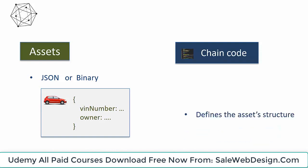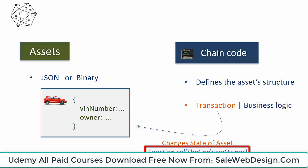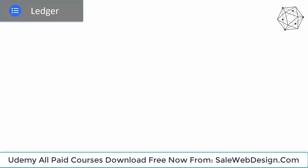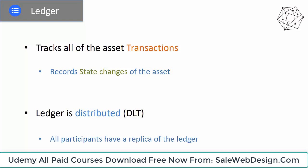State changes on Hyperledger Fabric can only take place by way of well-defined transactions coded in chaincode. Chaincode defines the structure of the asset and the transactions that can be executed against it — it has all of the business logic needed for the transaction. In the example of a car, there can be a function 'sell the car' defined in the chaincode, and calling this function leads to transfer of ownership of the specific car to the new owner. All transactions are recorded in a ledger — a data structure that keeps track of all transactions and the state changes in assets. The ledger in Hyperledger Fabric is distributed, meaning all participants have a replica or copy.